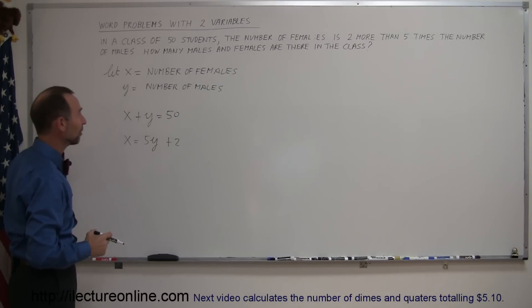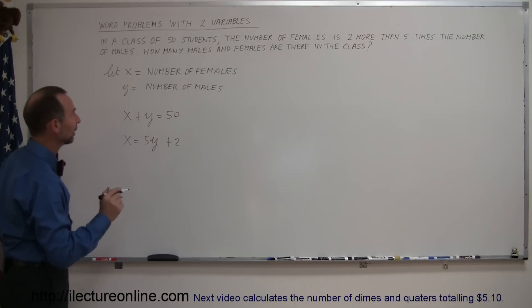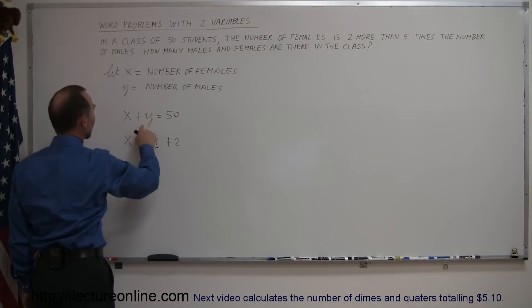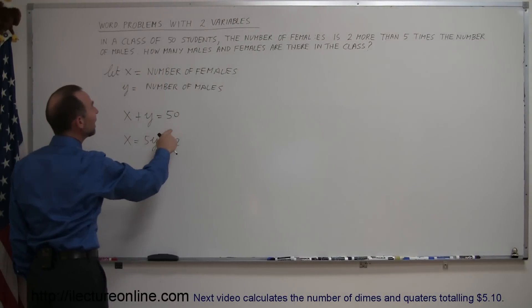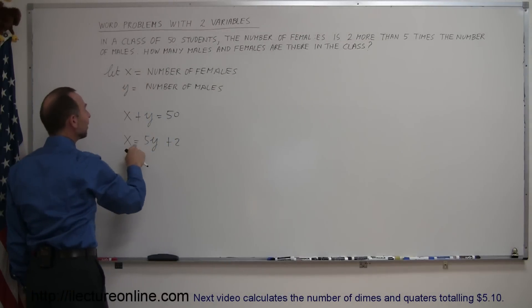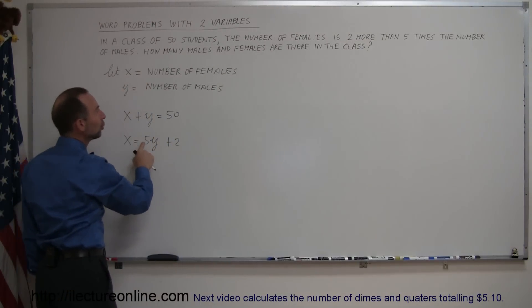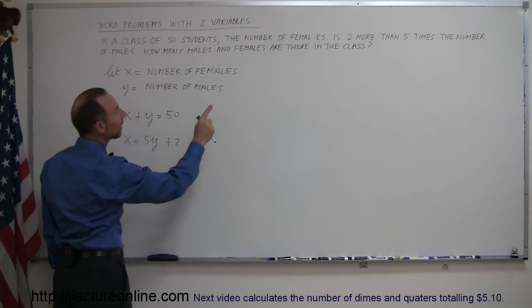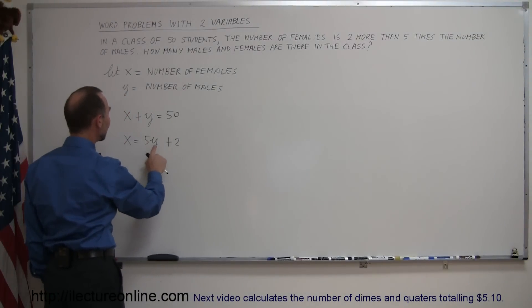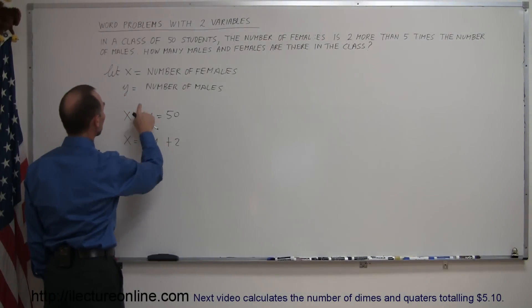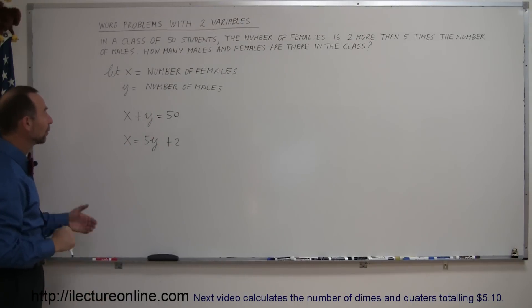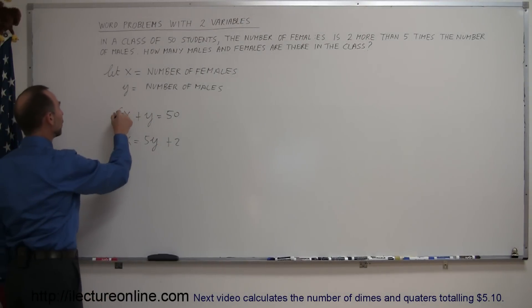So to recap: in a class of 50 students, x plus y equals 50. And the number of females, defined as x, equals two more than five times the number of males: x equals 5y plus 2. Now we have our two equations and two unknowns, and we're good to go.